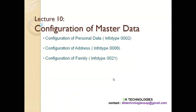Hello everyone. We are going to learn how to configure the master data. You must have learned about the info types in my previous lectures — what info type 1 means, info type 2, info type 6, info type 7, info type 9. If not, I recommend you go back to PA30 transaction code and have a look at each info type to understand what fields are stored. In today's class, let's understand what values can be configured for these info types.